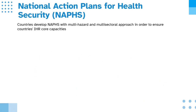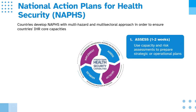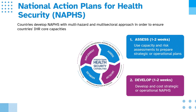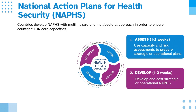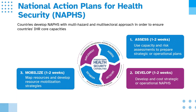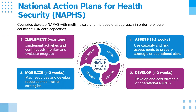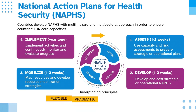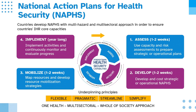Countries develop national action plans for health security, or NAPS, with multi-hazard and multi-sectoral approaches in order to ensure countries' IHR core capacities. Number one: Assess — use capacity and risk assessments to prepare strategic or operational plans. Two: Develop — develop and cost strategic or operational NAPS. Three: Mobilize — map resources and develop resource mobilization strategies. Four: Implement — implement activities and continuously monitor and evaluate progress. Underpinning principles: flexible, pragmatic, streamlined, simplified, one health, multi-sectoral, whole-of-society approach.